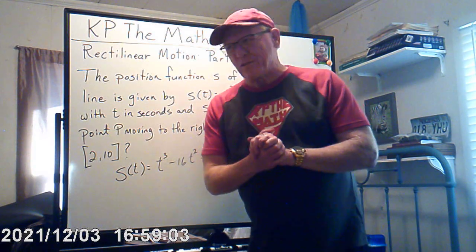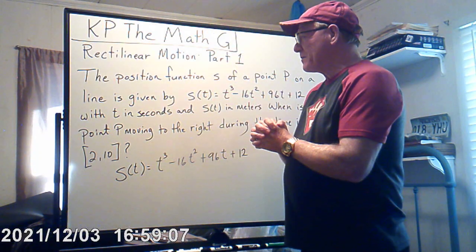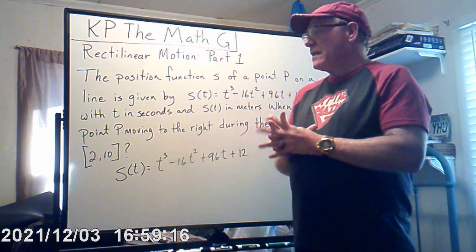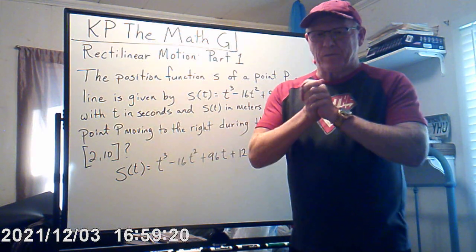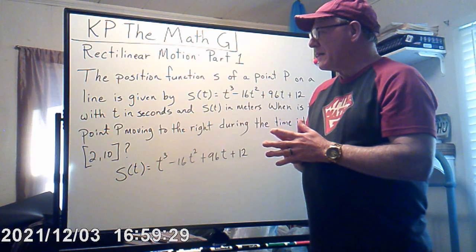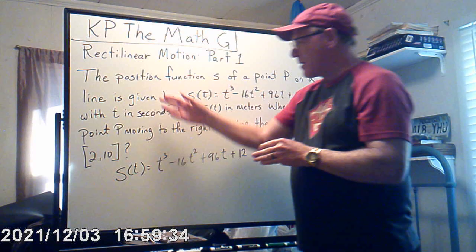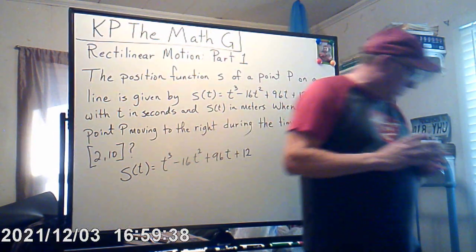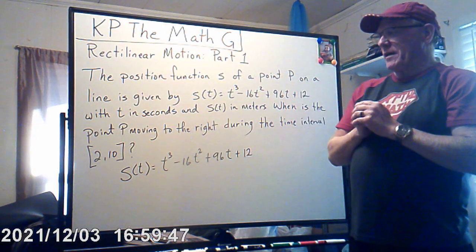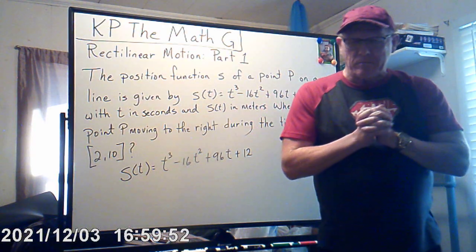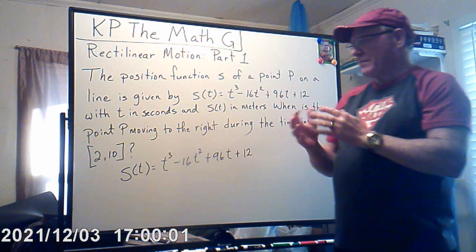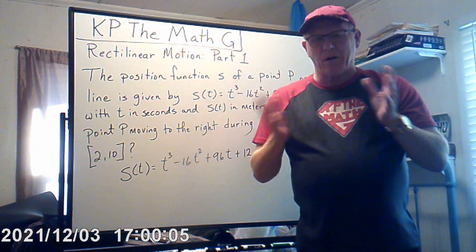Hello everyone, this is KP the Math G. We're talking about rectilinear motion. We've been doing derivatives for some time now and we're going to continue that for at least a couple more times, then probably get into anti-derivatives later. We'll probably do three parts: one dealing with a position function, another with a projectile being tossed up, and the third interpreting a velocity graph — most likely in that order.